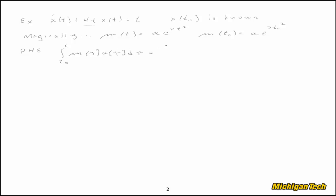Plugging everything in, we get alpha times the integral from t₀ to t of τ·e^(2τ²) dτ. Evaluating that integral gives alpha/4 · e^(2τ²) evaluated from t₀ to t, which equals alpha/4 · (e^(2t²) − e^(2t₀²)).